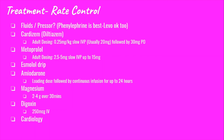If Cardizem and Metoprolol did not work and the patient is still in AFib RVR, the next medication is Amiodarone — typically 150mg IV as a bolus over 10–15 minutes, followed by a continuous drip. Magnesium can also be given for its calming effects on the heart, usually 2–4 grams over 30 minutes. By this point, if the patient is still unstable, your ER provider should have contacted cardiology. Another option sometimes used is Digoxin, given very slowly — even up to a 15-minute push — but it can take up to 8 hours to start working, so cardiology should be involved.